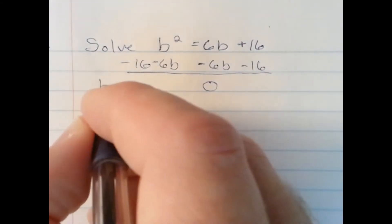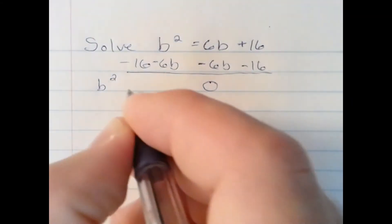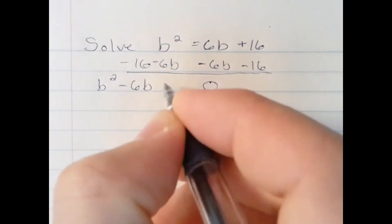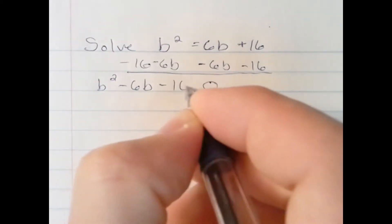And writing things in standard form, b squared, minus 6b, minus 16, is equal to 0.